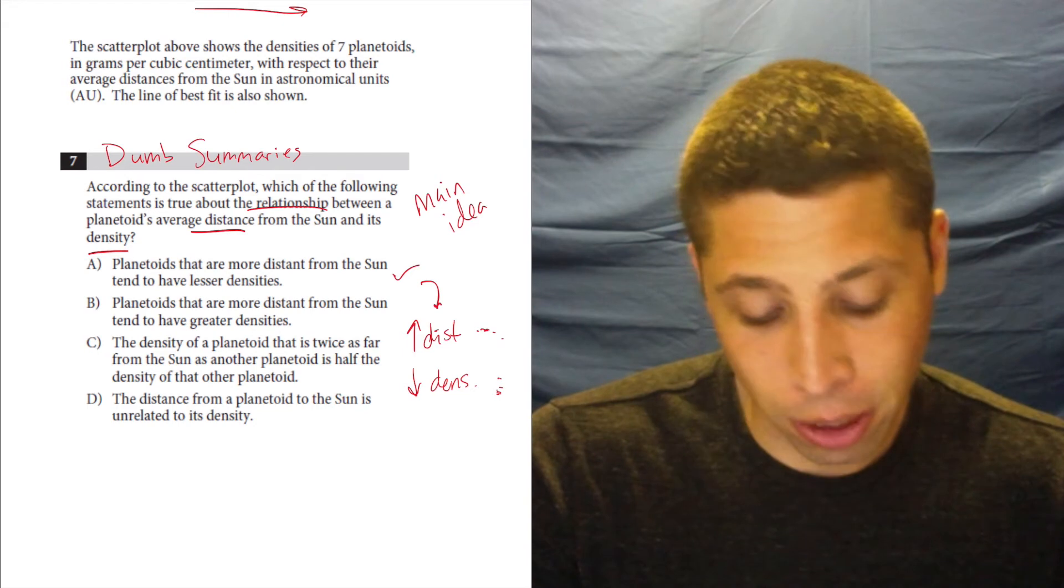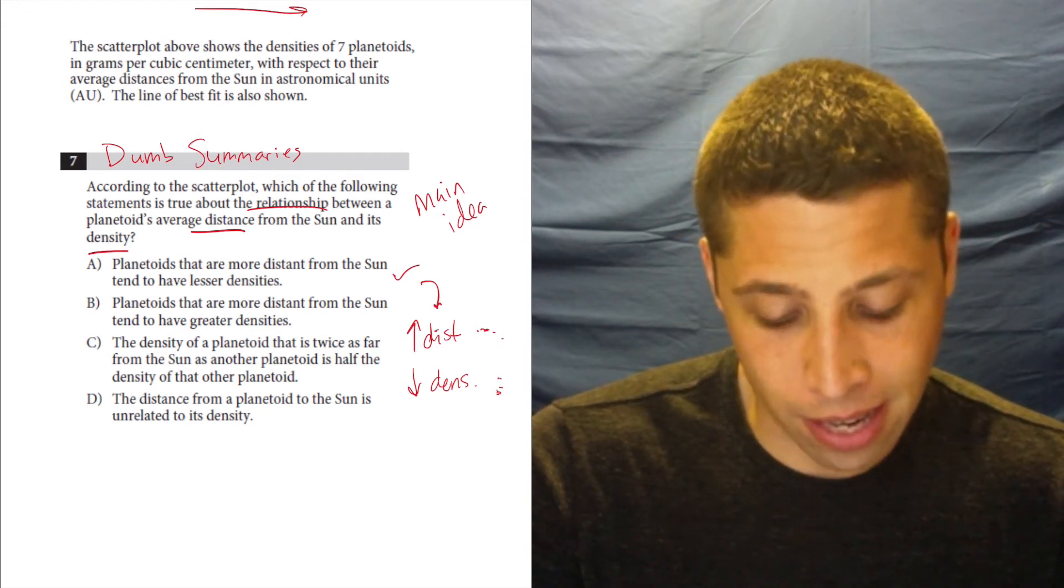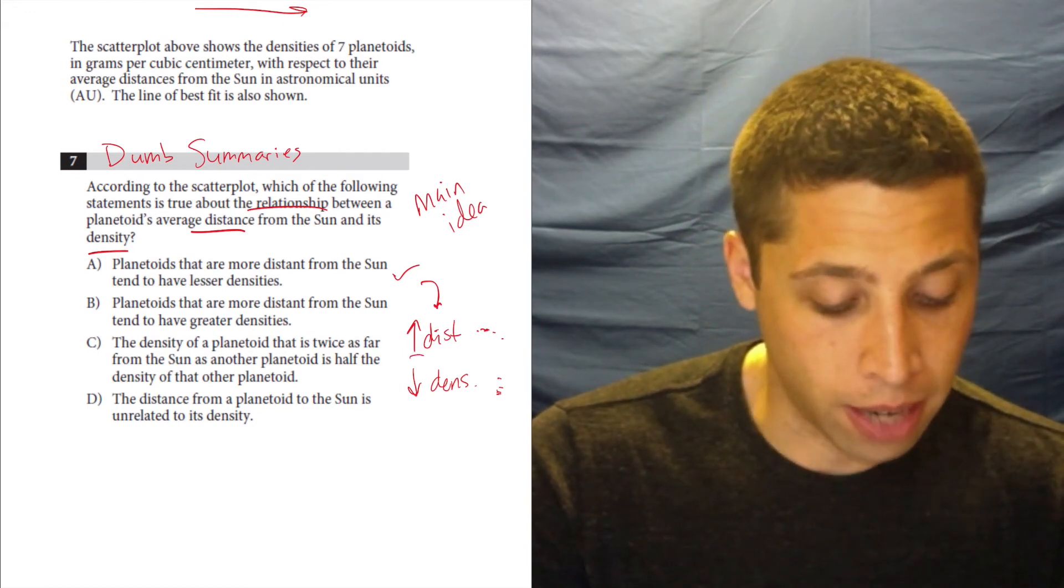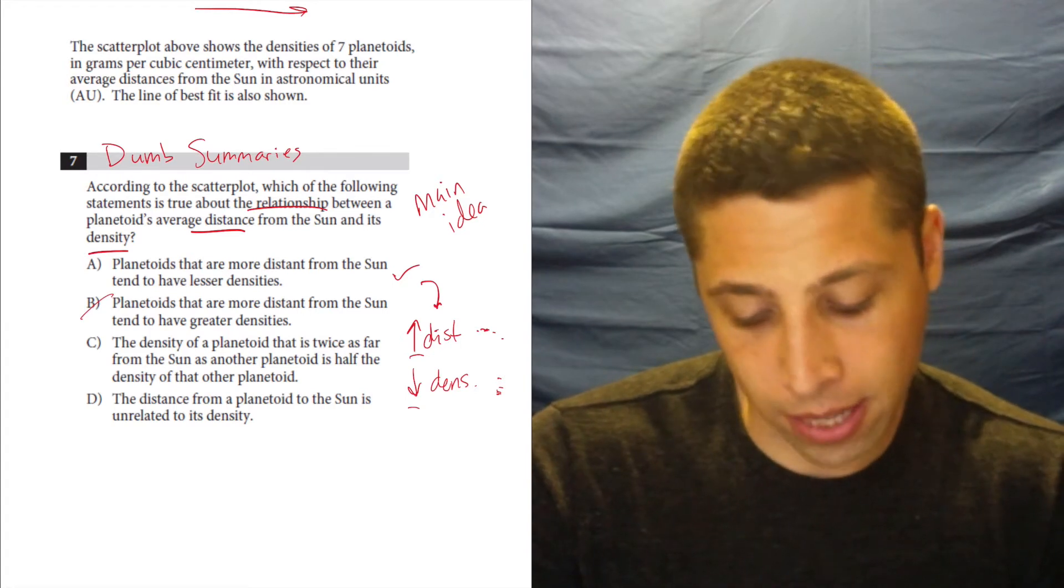Let's see B. Planetoids that are more distant from the sun tend to have greater densities. No. High distance means low density. That's the opposite.